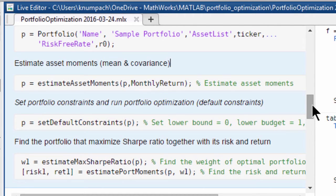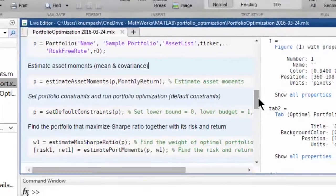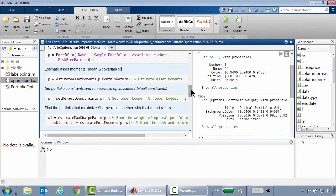We are using built-in practitioner level functions in financial toolbox such as estimate max Sharpe ratio and estimate port moments to find the weights of optimal portfolio that maximize Sharpe ratio together with its risk and return. These built-in functions enable us as financial experts to spend our time working on interesting financial problems instead of reinventing the wheel in writing code.